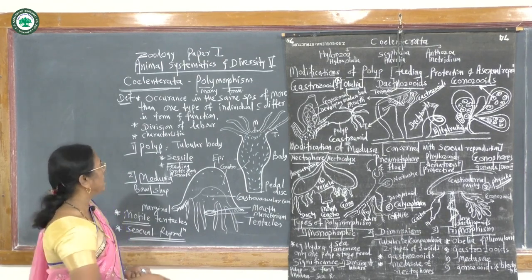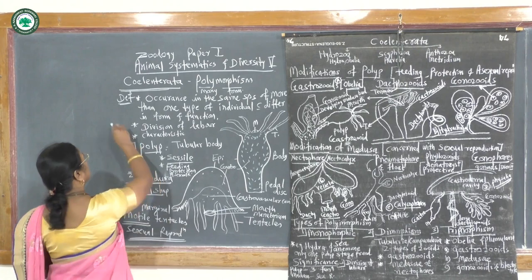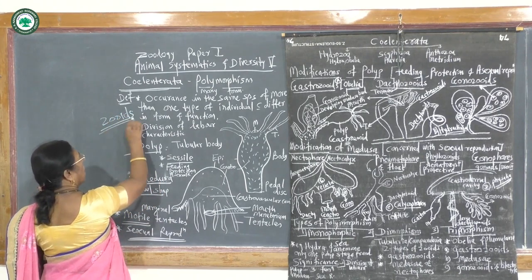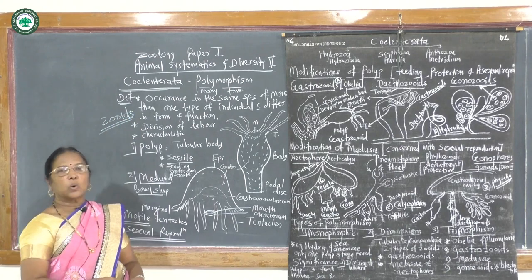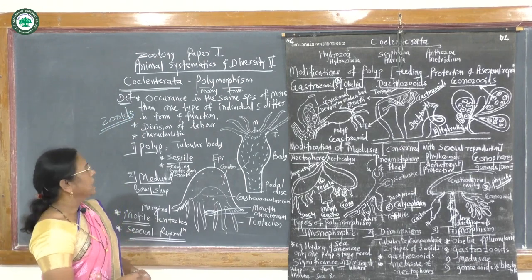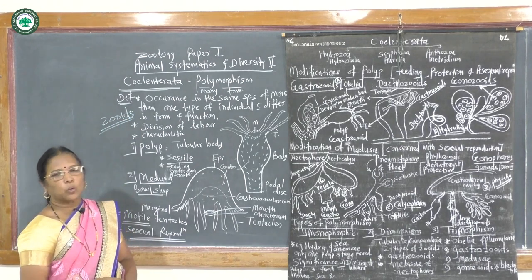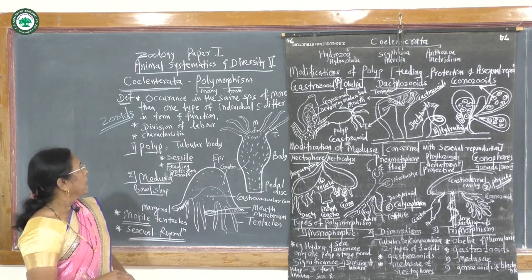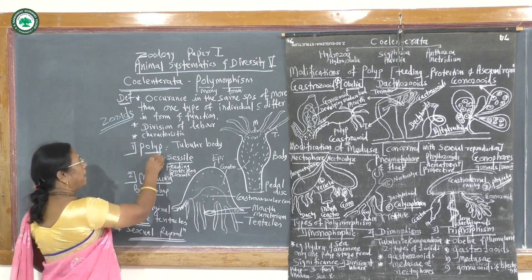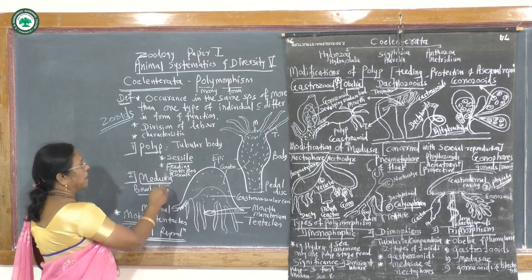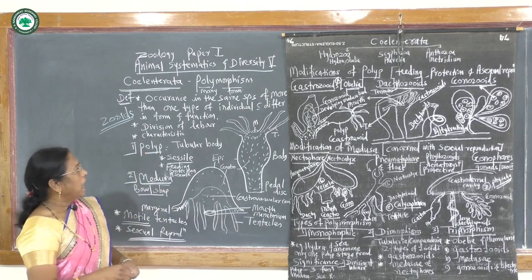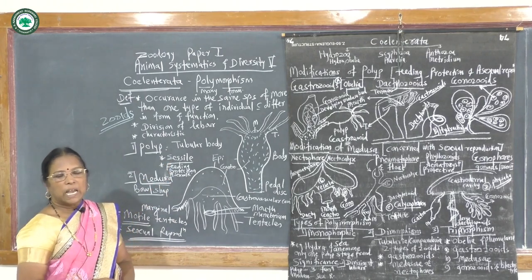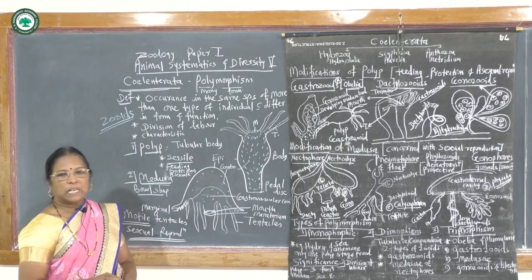Zoids, also called individuals, are the two basic forms found in polymorphism. The first is the polyp and the second is the medusa. Polyps are sessile individuals — these animals live in water attached to any material such as stone, leaves, or debris.